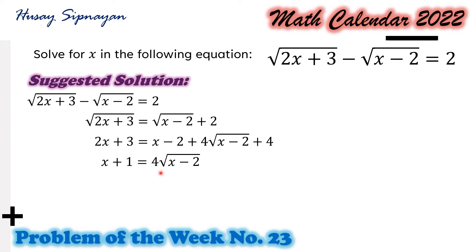Again, we square both sides of this resulting equation. We apply the square of a binomial on the left hand side. We have x squared plus 2x plus 1. On the right hand side we have 16 times the quantity x minus 2.